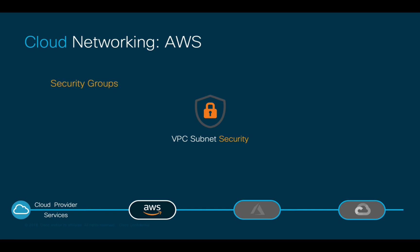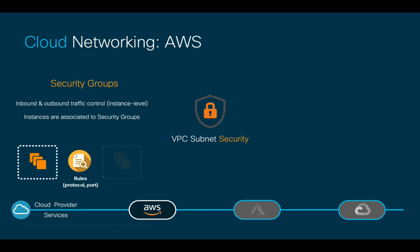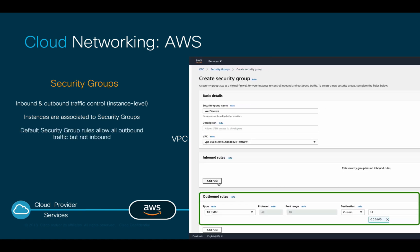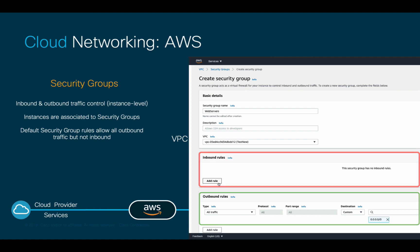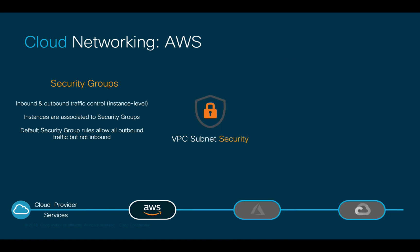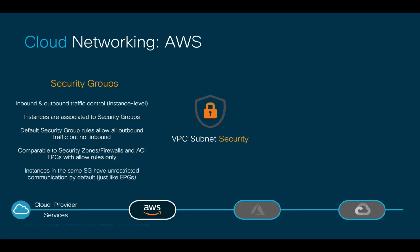Security groups are used to control inbound and outbound traffic and are assigned per instance. Instances in a security group need rules to communicate to other security groups, prefixes, and more. Every new security group you create will allow all outbound traffic by default, while denying all inbound traffic until you explicitly adjust it, following an allow-lists model. Security groups and their rules are comparable to ACI EPGs and contracts, or firewall security zones. Just like with ACI, endpoints in the same security group have unrestricted communication by default.